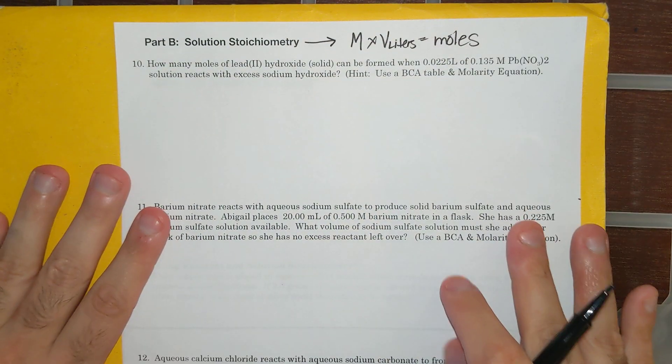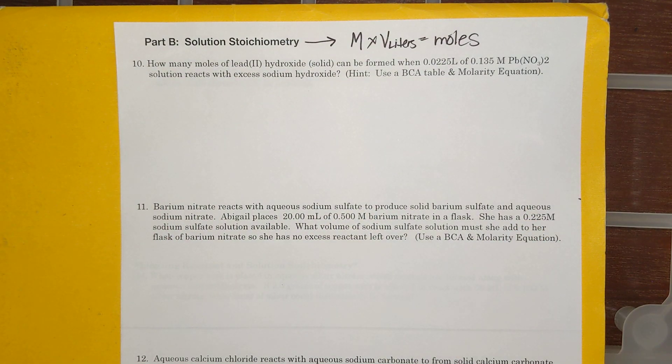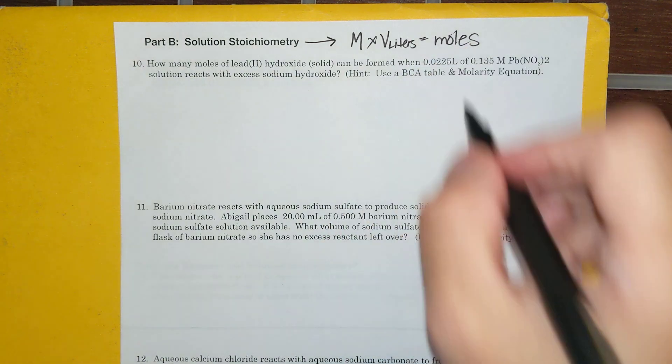Molarity times volume in liters equals moles. Remember, whenever we do stoichiometry, I need moles, so I'm going to be given enough information to give me my moles using molarity and volume.